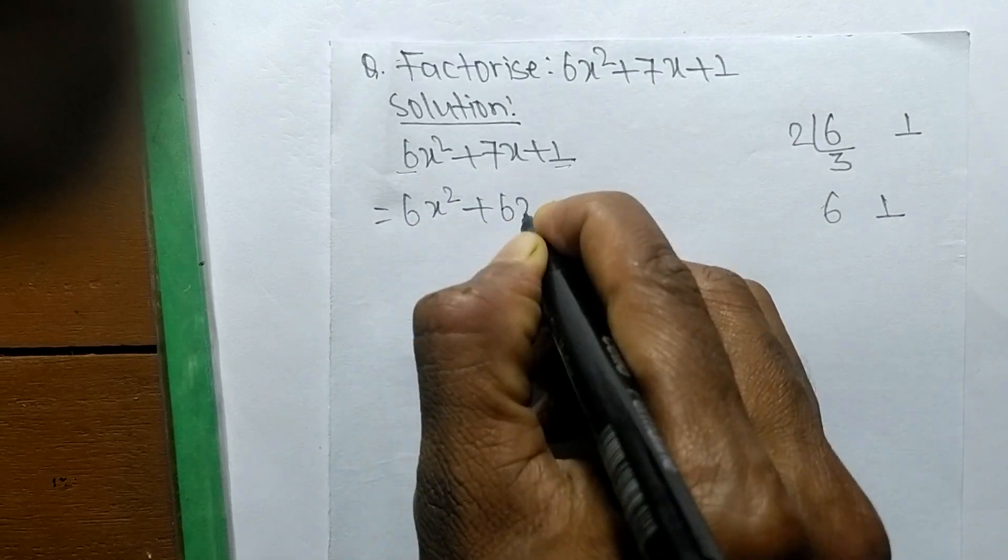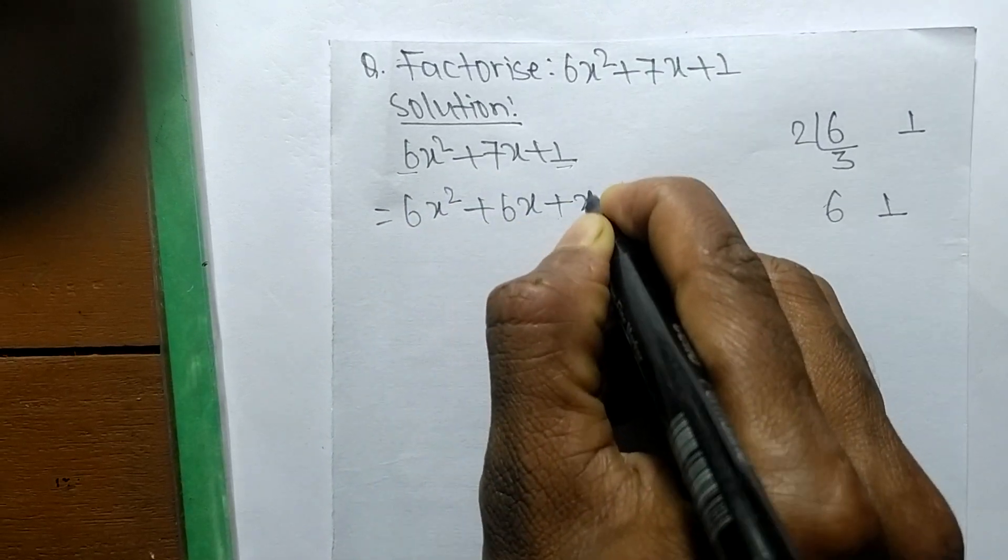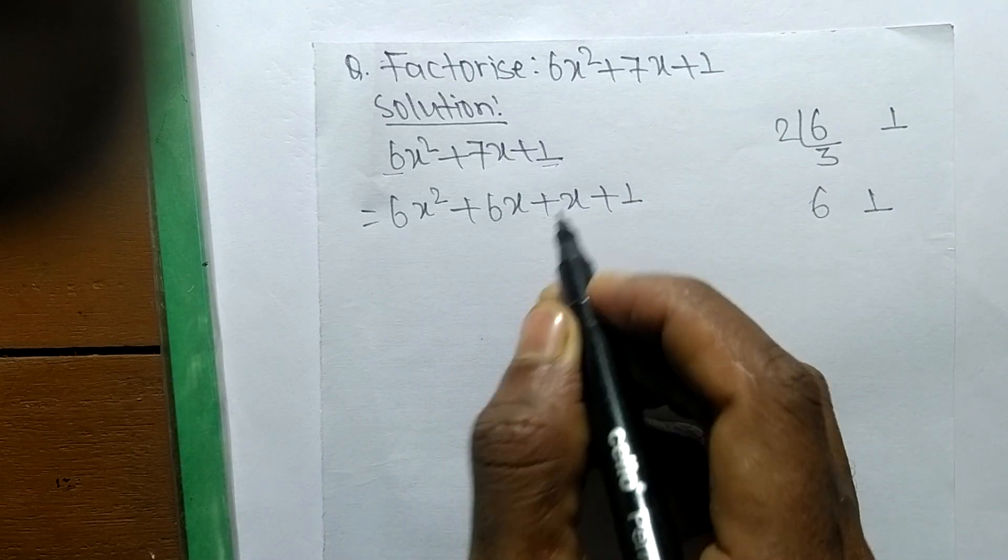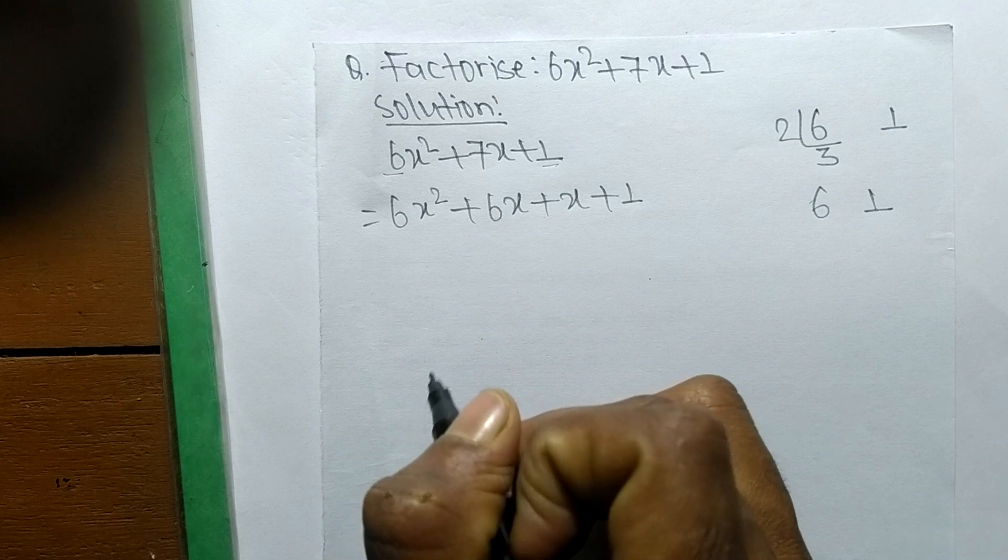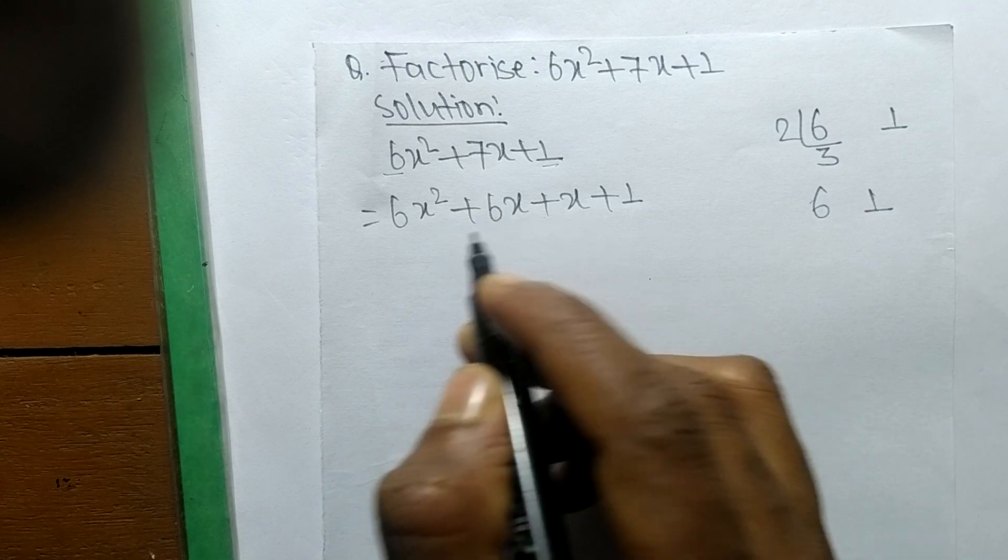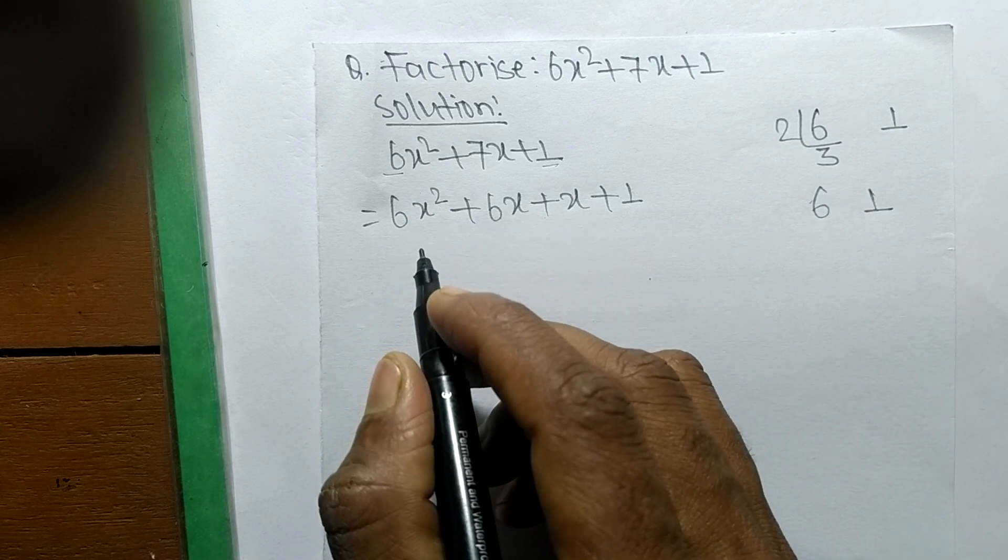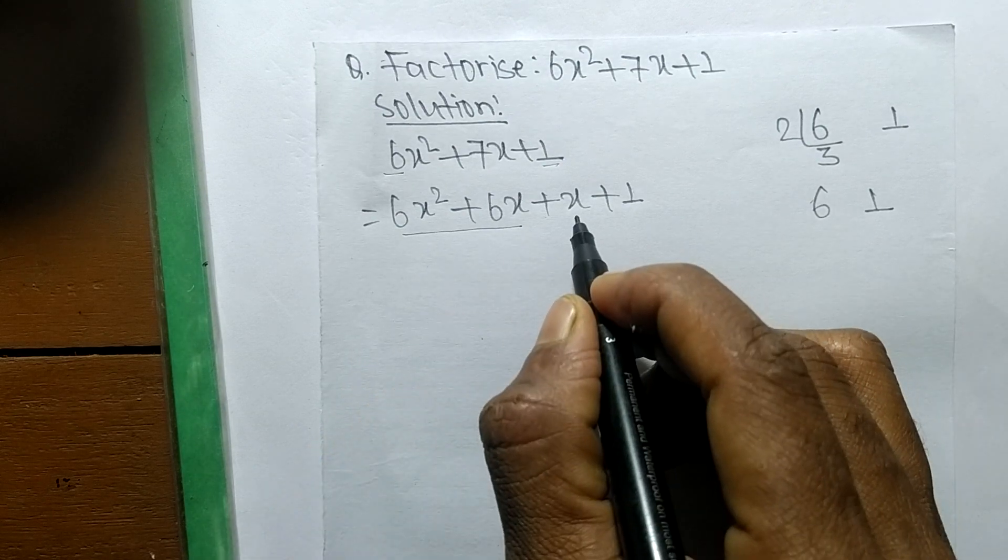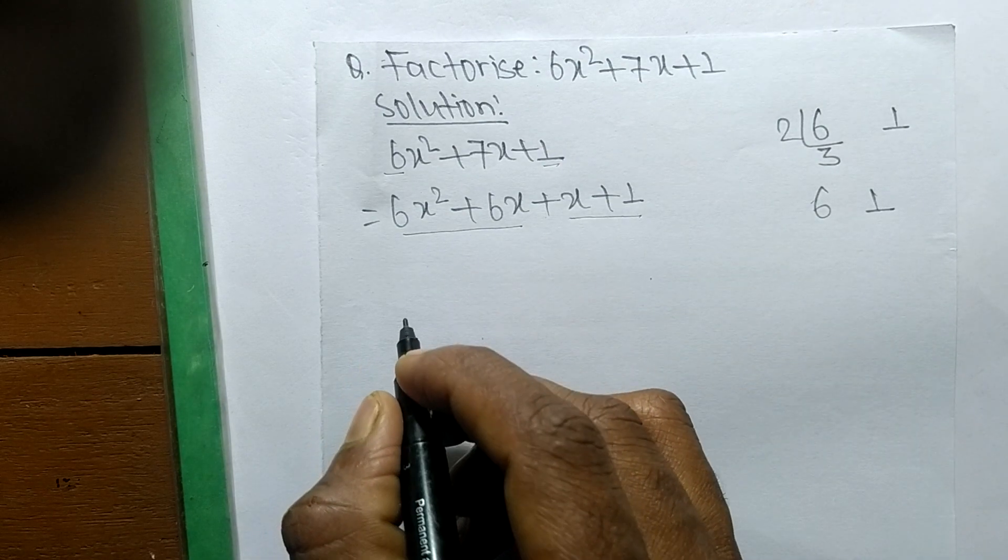6x + x means it is 7x. So now we have to separate these expressions into two pairs. These both are first pair, and these both are second pair.